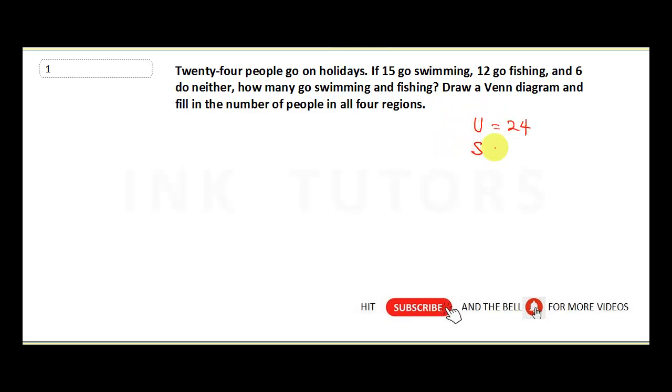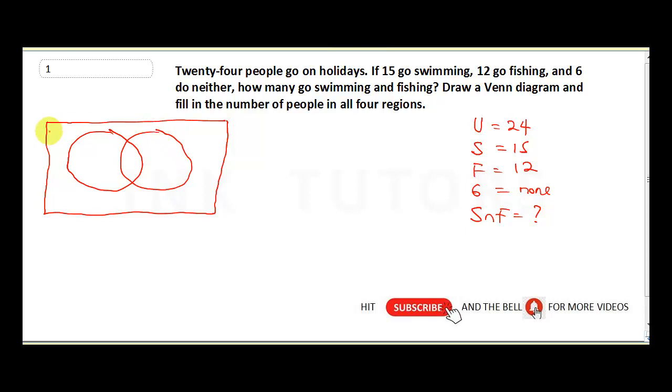So the universal set is going to be 24. Swimming I'll connect with S, that's 15. And 12 go fishing. Fishing is going to be 12. And 6 do none. And how many go fishing and swimming? That swimming and fishing, that swimming intersection of fishing, we don't know that yet. So let's draw a Venn diagram to get this. So I will draw my rectangle.